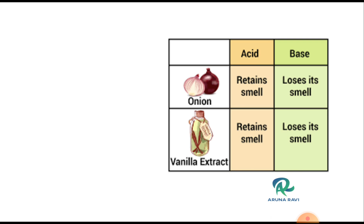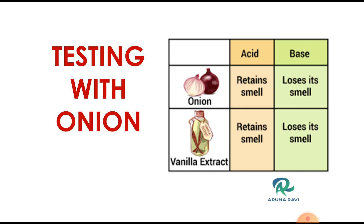Since there is a change in smell, we can tell whether the given substance is an acid or base. In acids, the olfactory indicator retains its smell. In bases, they lose their smell. We will try to test using onion or vanilla extract.